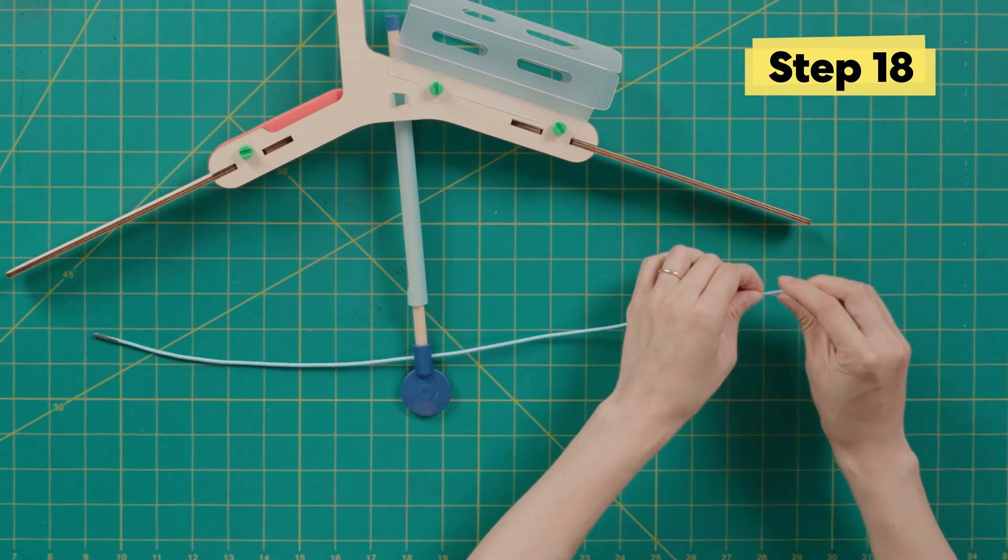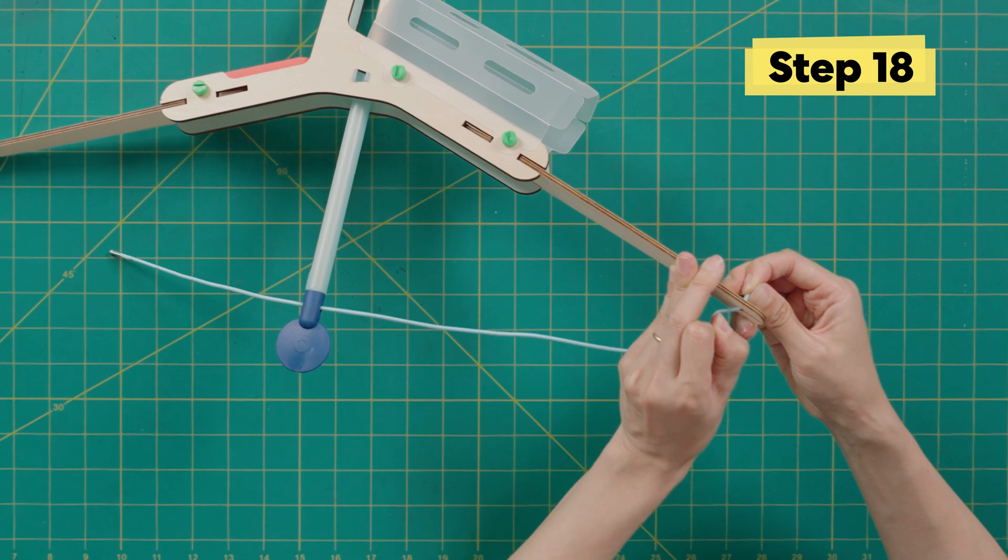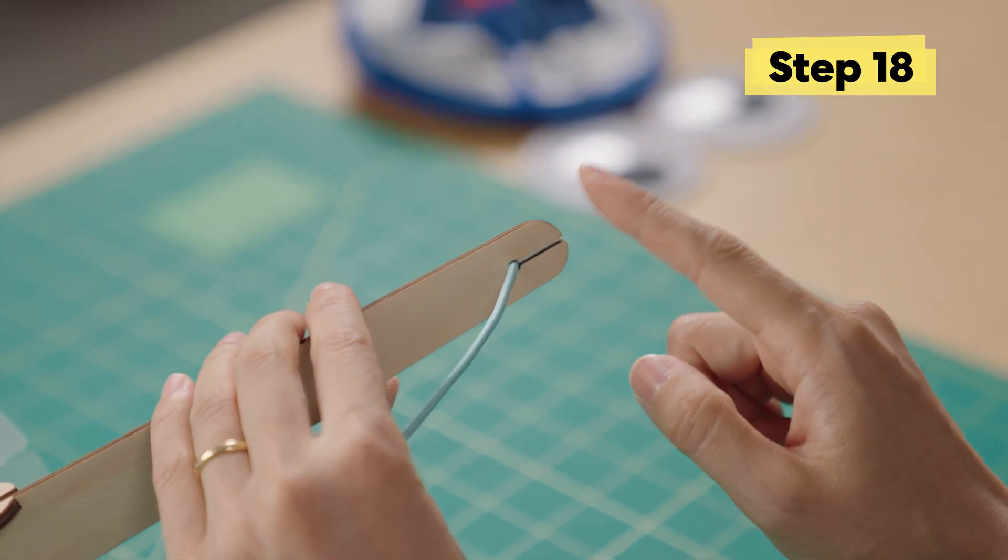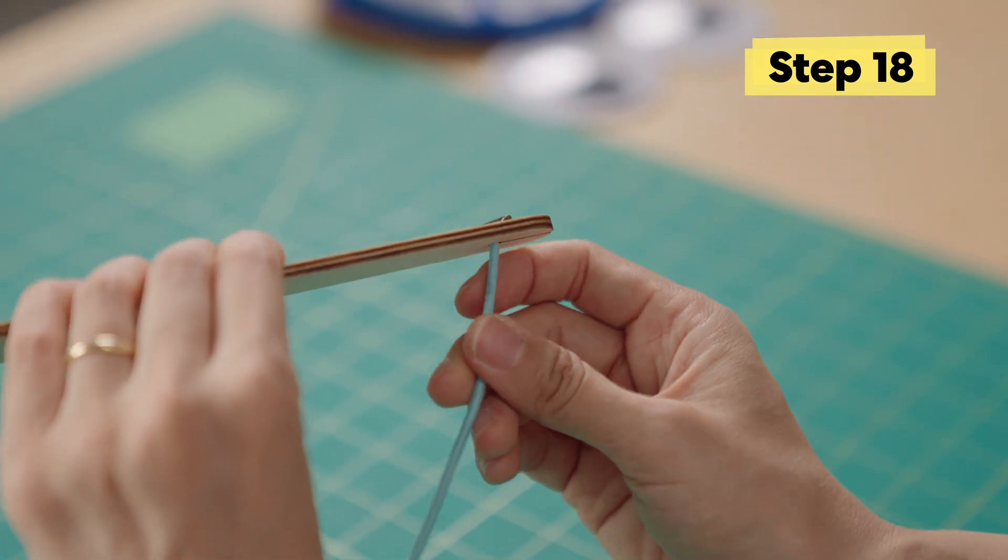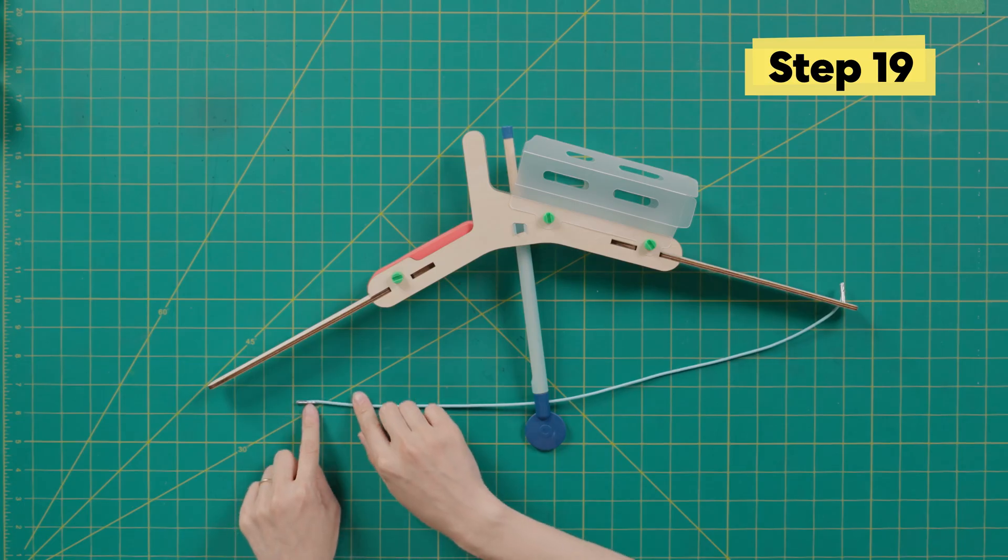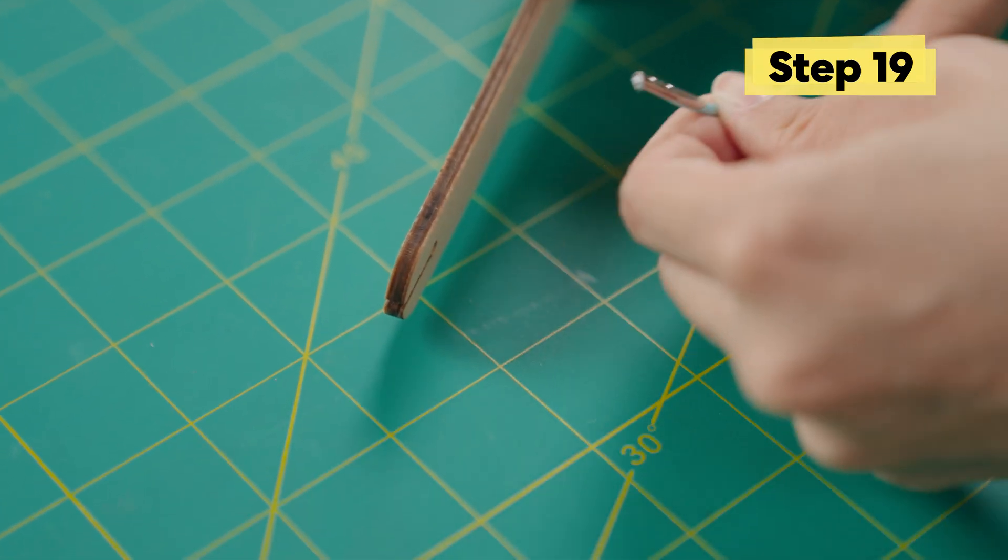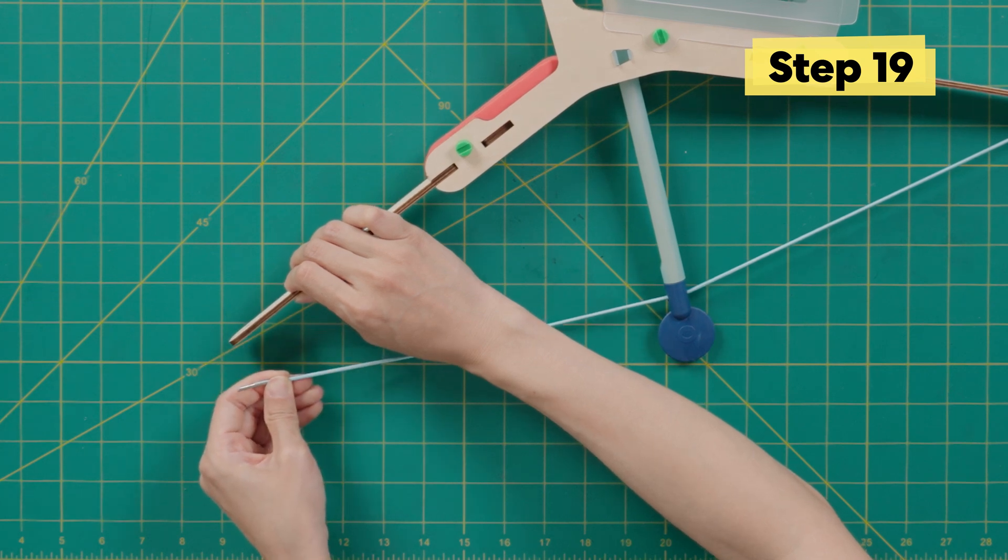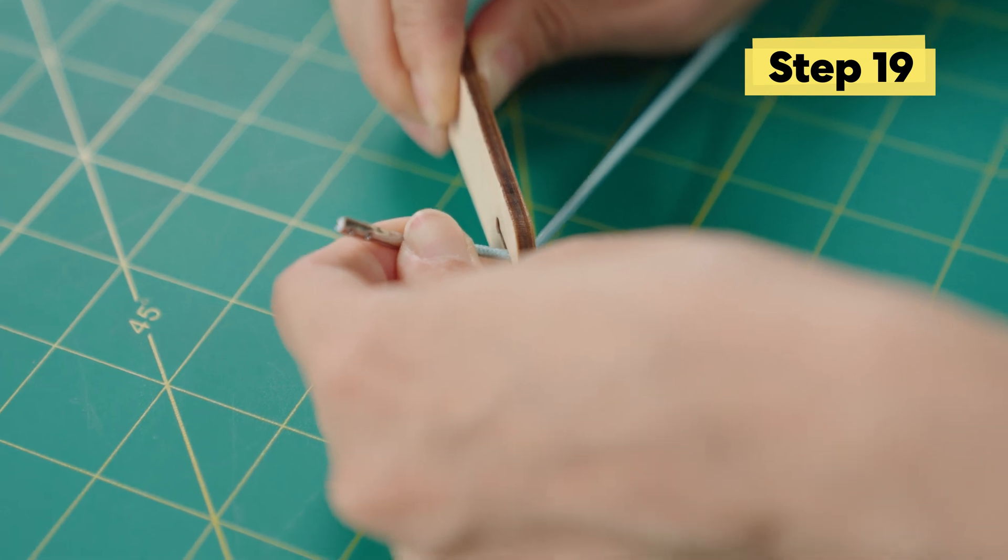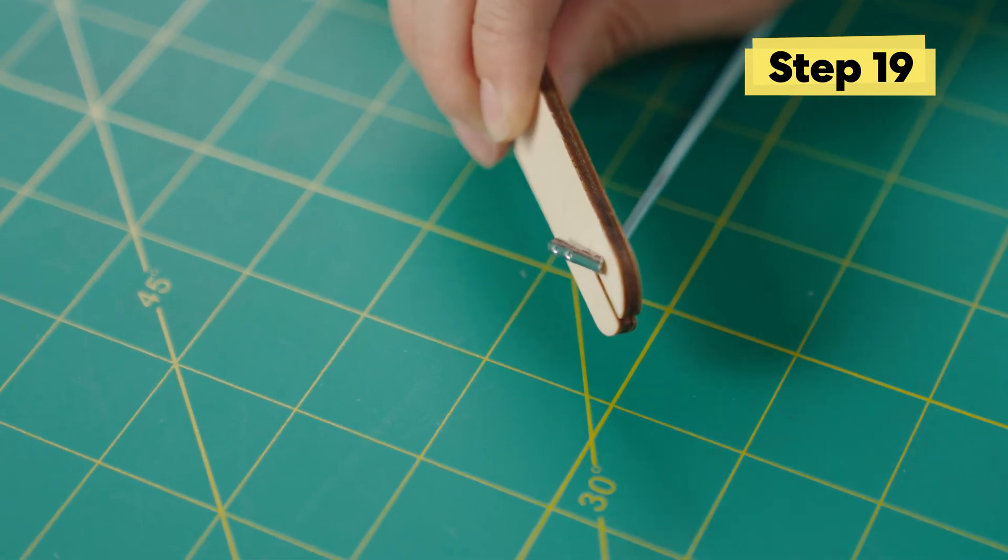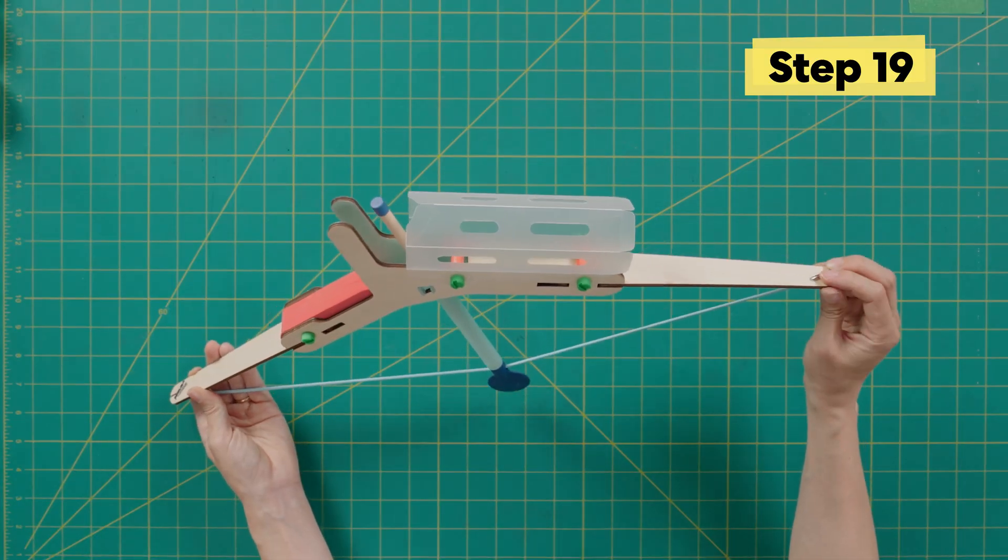Now take the string and wedge it through the groove at the end of the limb. Pull it so this metal piece is flat. Now do the same thing for the other side. But remember, this bow string has a lot of stored energy, so make sure you hold both the bow and the string when doing this so you don't hurt yourself. Make sure the metal caps are flush to the limbs.